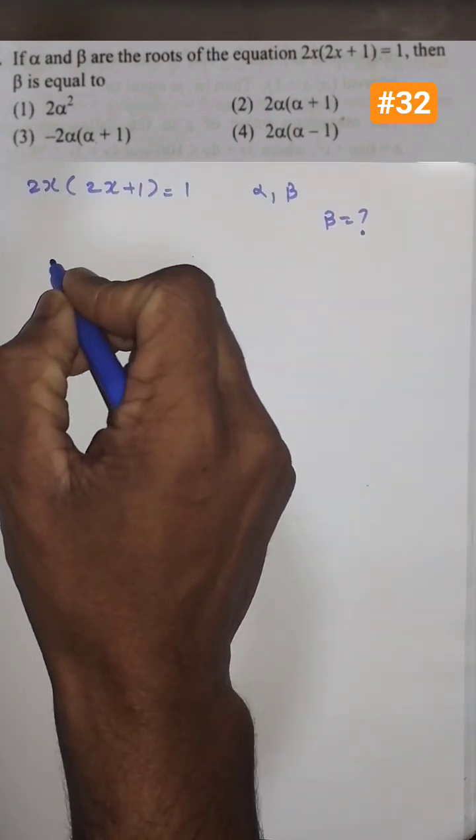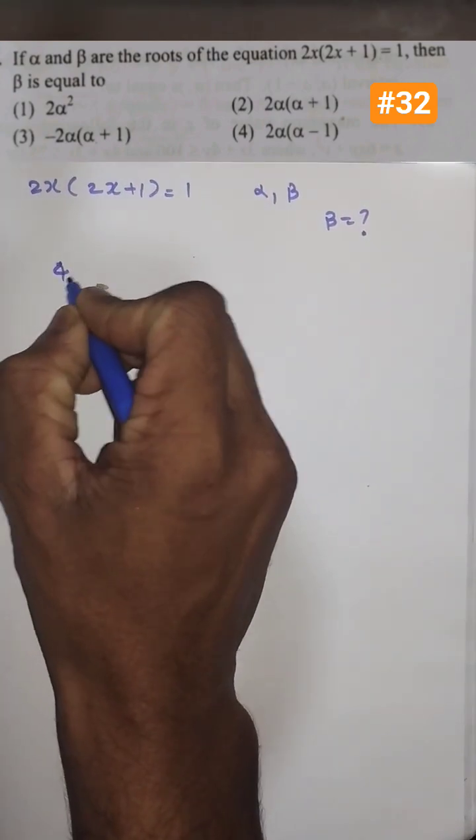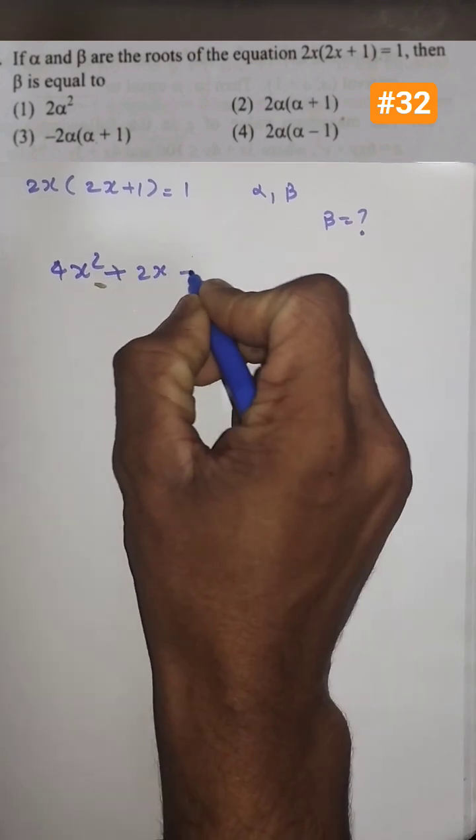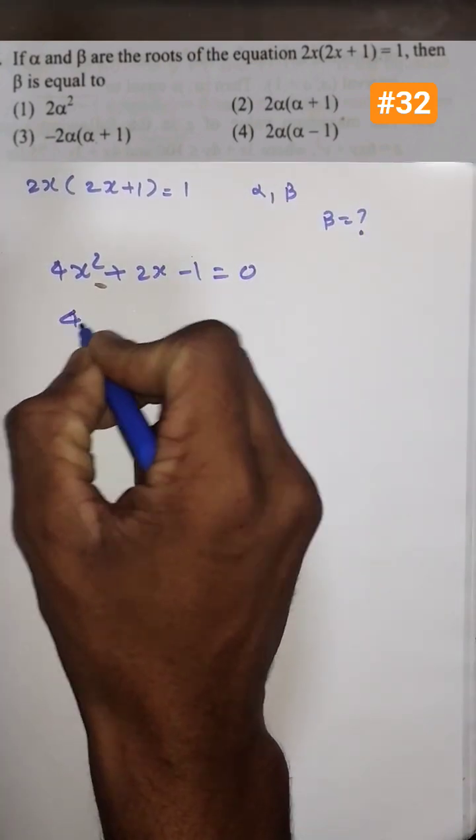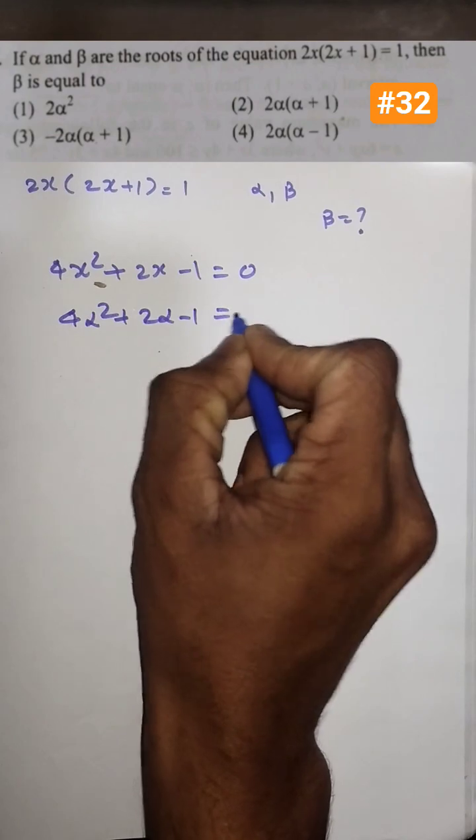Let's make it as a quadratic equation. We will be getting 2x into 2x, that is 4x square plus 2x minus 1 equal to 0. And in this I can put the value of alpha. I'll be getting 4 alpha square plus 2 alpha minus 1 is equal to 0.